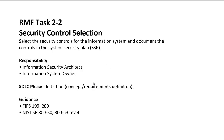Task 2 is security control selection: you select security controls for the information system and document them in the SSP. Responsible parties are the Information Security Architect and Information System Owner. The SDLC phase is the initiation phase. NIST guidance includes FIPS 199, FIPS 200, NIST SP 800-30, and NIST SP 800-53 Revision 4.